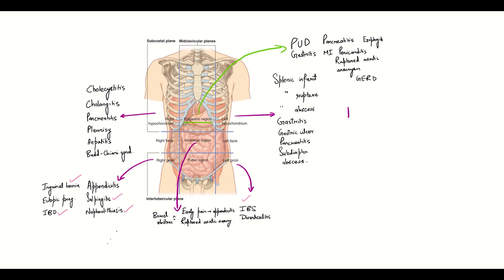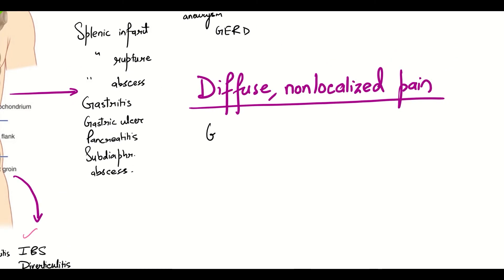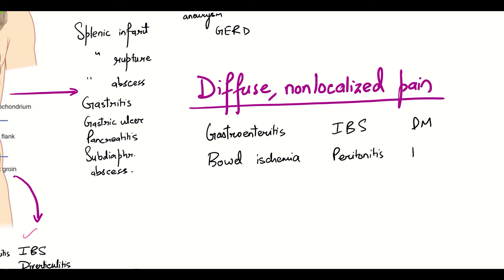At the same time, we should also know the conditions which are associated with a diffuse and non-localized pain: gastroenteritis, bowel ischemia, irritable bowel syndrome, peritonitis, diabetes mellitus, familial Mediterranean fever, metabolic diseases, and neurologic diseases. They don't have localized pain as a symptom, so we should look out for these conditions if a patient is presenting with diffuse and non-localized pain.